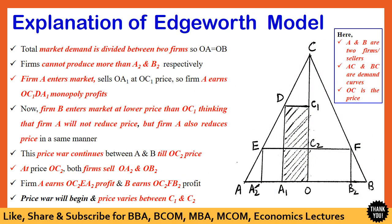Based on these assumptions, the Edgeworth model was developed. In the given figure, A and B are the two sellers or firms. AC and BC are the respective demand curves of sellers A and B, whereas OC is the price. The total market demand is divided between two firms A and B, that is OA equals OB as assumed.